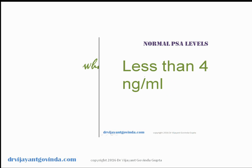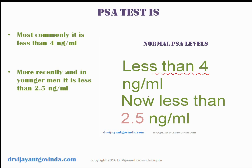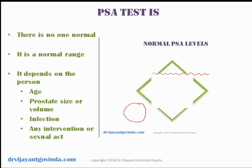What is normal PSA? More commonly, PSA is considered less than 4 nanograms per ml to be normal. But more recently, especially in younger men, the new cutoff is 2.5 nanograms per ml. There is no single normal value — it is a normal range. If we do PSA in 100 patients, 50 would have it around 1, another 50 around 2, and some may have it around 3.